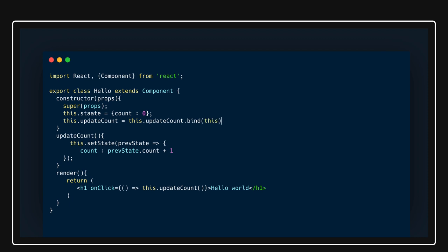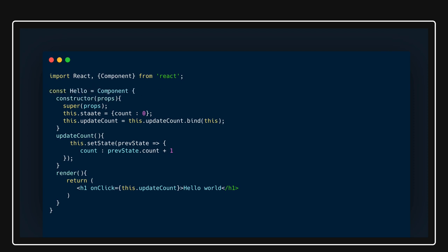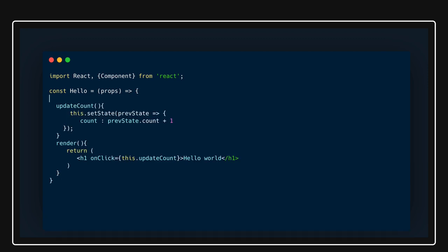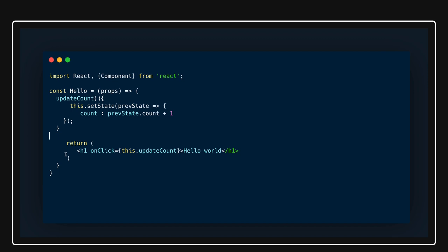With a class-based component you end up writing a lot of code — binding 'this', defining setState, etc. Now, to convert this to a functional component, I'll create an anonymous function: 'const Hello'. Here I'm destructuring props if I'm receiving anything from the parent component. There's no render function — the function itself just returns the JSX directly.